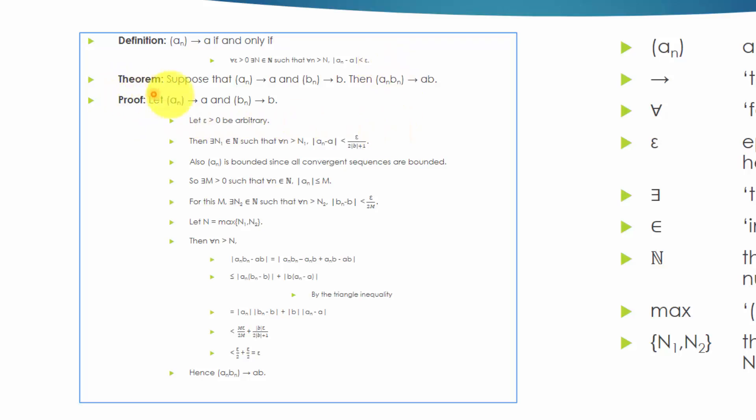The theorem: suppose that a sequence A-N converges to A, and another sequence B-N converges to B, then the sequence of A-N times B-N converges to A times B. The sequence A-N times B-N is made by multiplying the corresponding A-N and B-N terms.